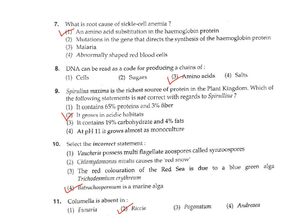Evaluating the options for Spirulina: Option 1 — it contains 65% protein and 3% fiber — correct. Option 2 — it grows in acidic habitat — this is incorrect. Option 3 — it contains 19% carbohydrates and 4% fat — correct. Option 4 — at pH 11 it grows almost as a monoculture — also correct. So the correct (wrong) answer is Option 2.